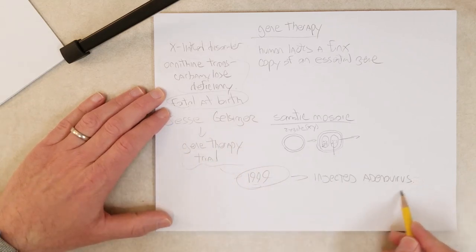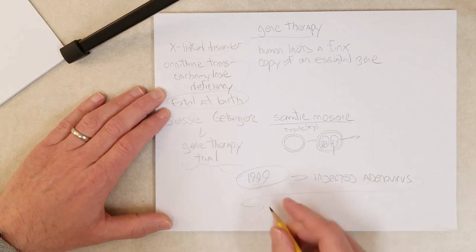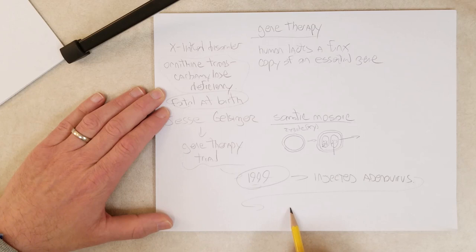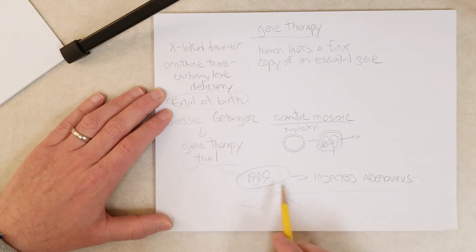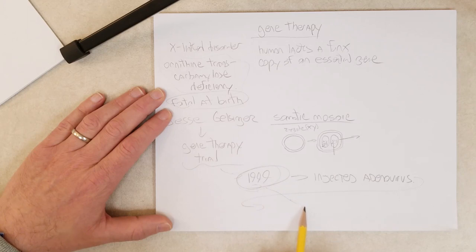So unfortunately, very tragic, the high levels of this adenovirus triggered a massive immune response in Jesse, which led to a failure of a number of his organs and he died after about four days. So this is in 1999. And with such a tragic result of the gene therapy trial, you can imagine that it paused all gene therapy research for many, many years.